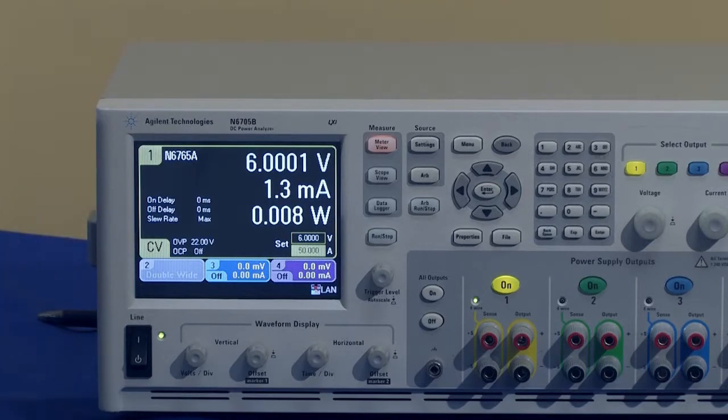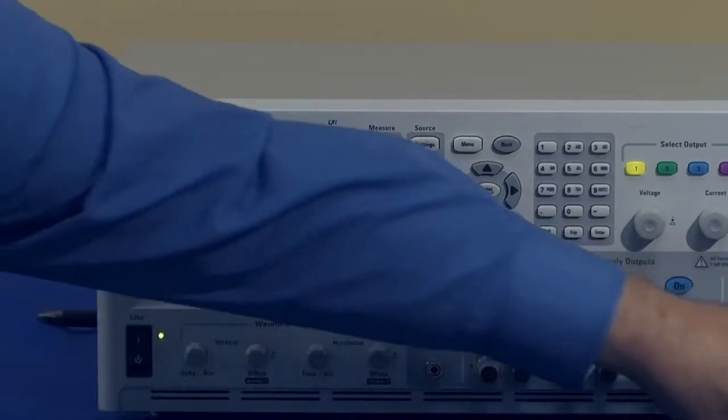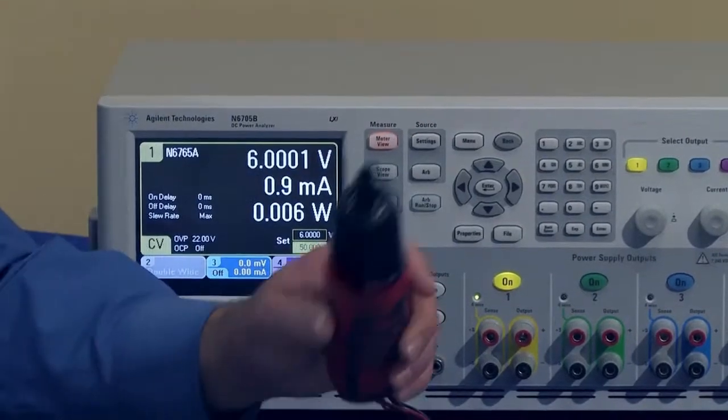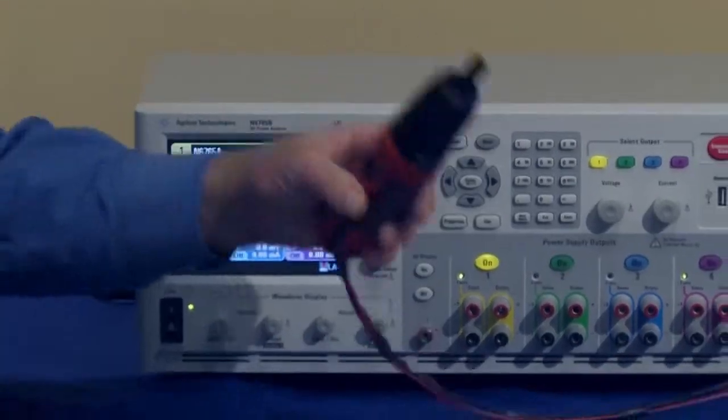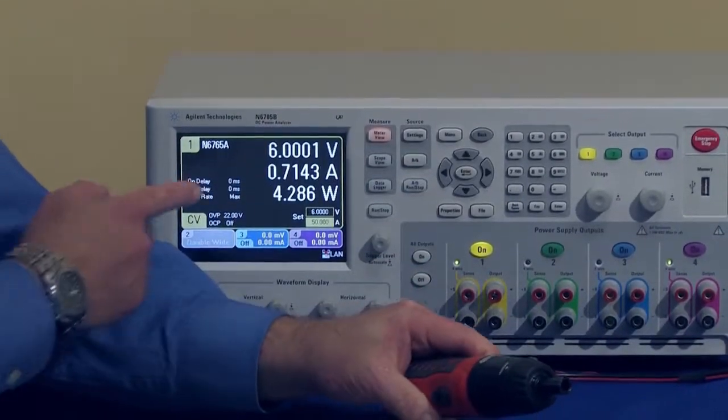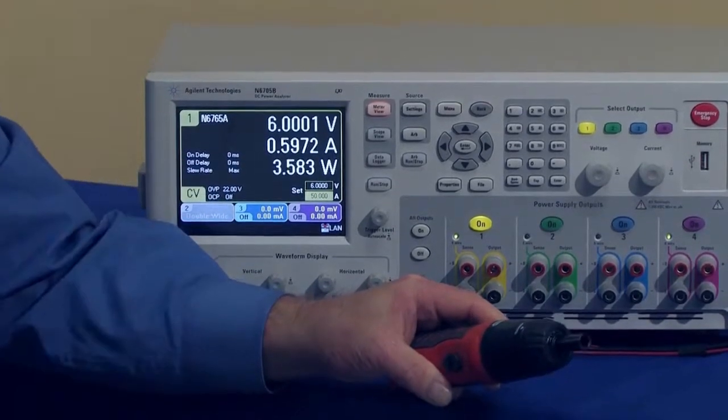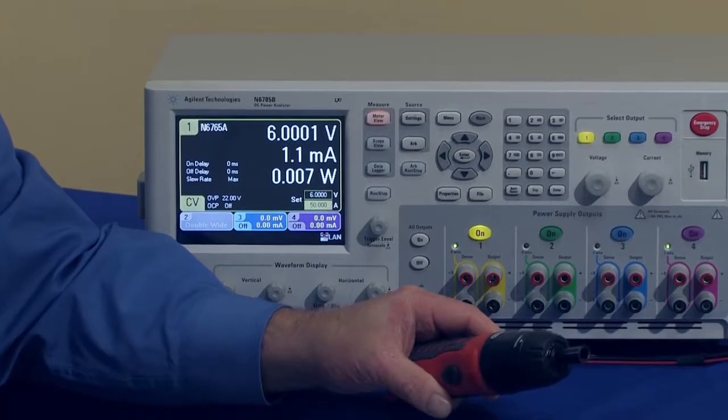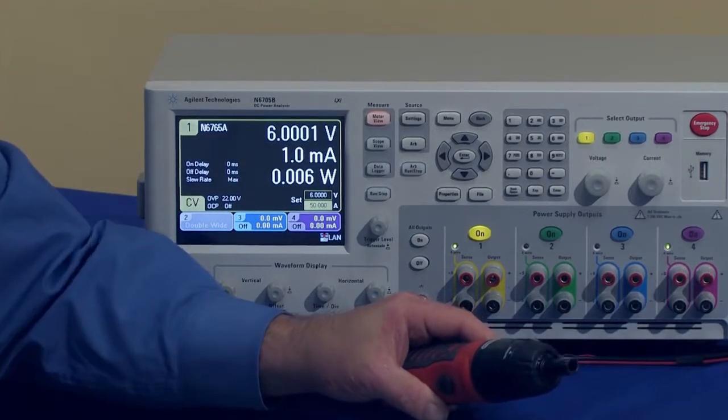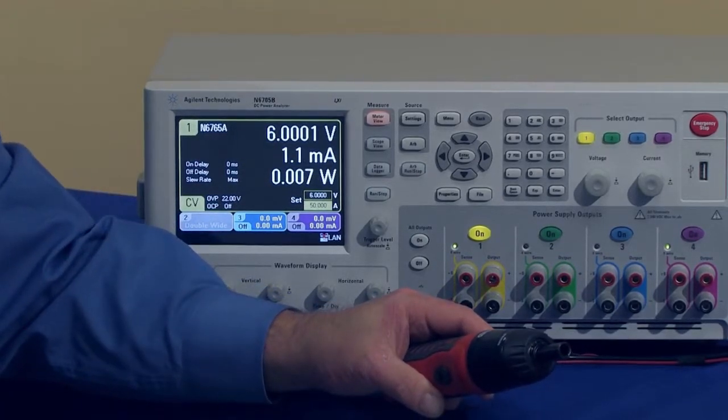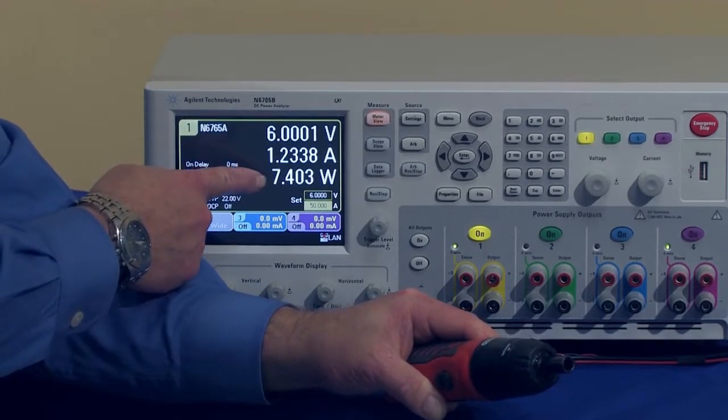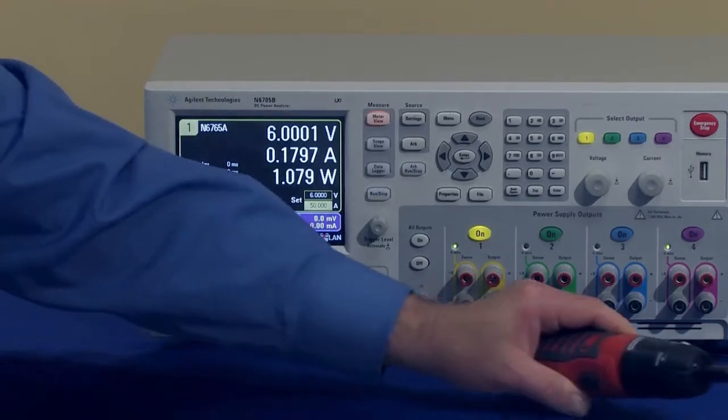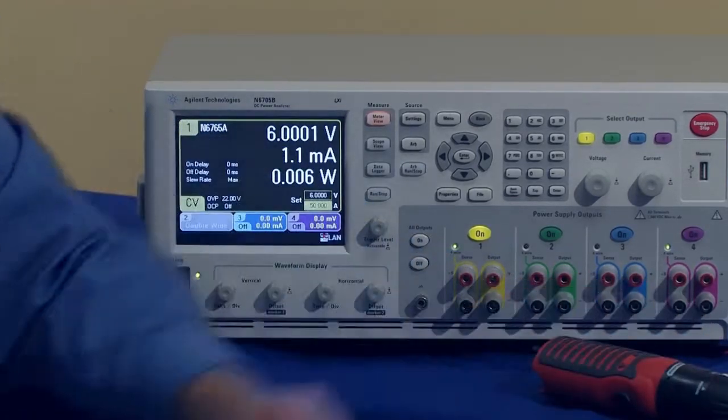And it's set in constant voltage mode. So let me begin by running the drill, the screwdriver here. So I'll just hold the button down. And as you can see on the display, it's pulling about 600 milliamps static current with no load on the motor. So that's what you'd expect, kind of low power. And as I mentioned, the power here is about seven watts or so when the drill is running.